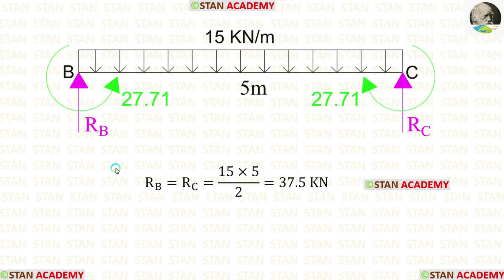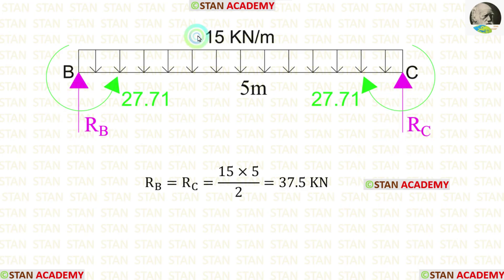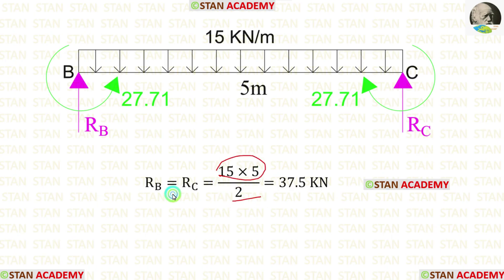Now let us take beam BC and find the reactions. There is no need to consider the end moments because they act in opposite directions and cancel each other out. Since there is a UDL, multiplying the UDL by the span gives the total load, and dividing by 2 gives RB and RC.